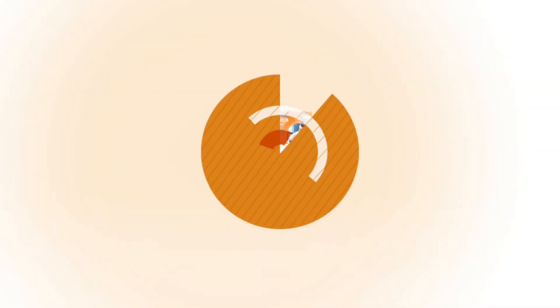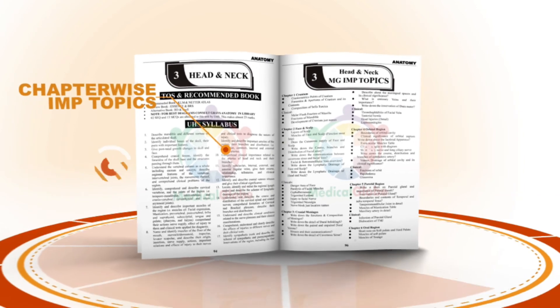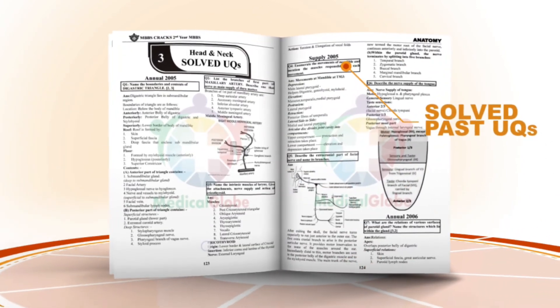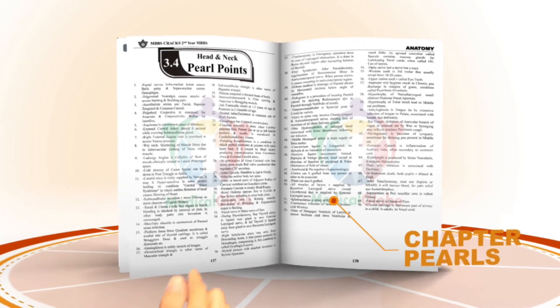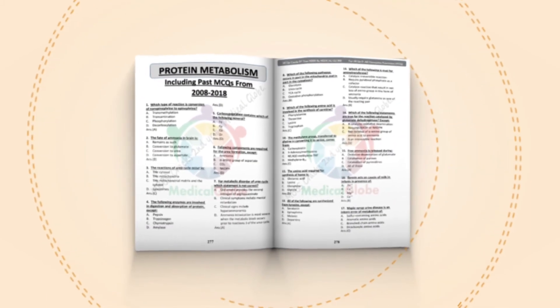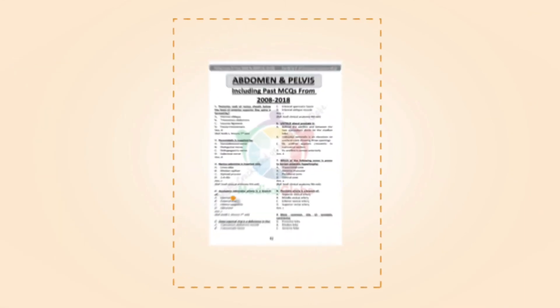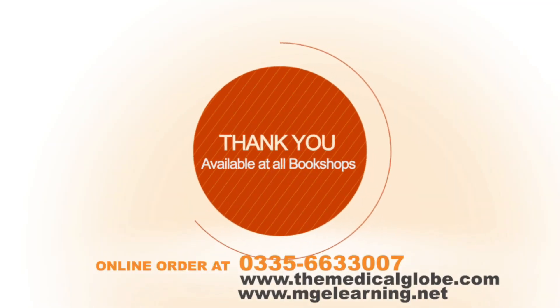Medical Globe introduces its series of successful publications: MBBS Cracks — the benchmark of all, containing all chapter-wise questions of prime importance, all annual and supply solved university questions, OSPE vivas, chapter pools, and labelled histologic and anatomic models in high resolution for distinction-level preparation. Medical Globe has also launched the MCQ Cracks, encompassing UHS, NAMS, and many others. Order at 0335-6633007.